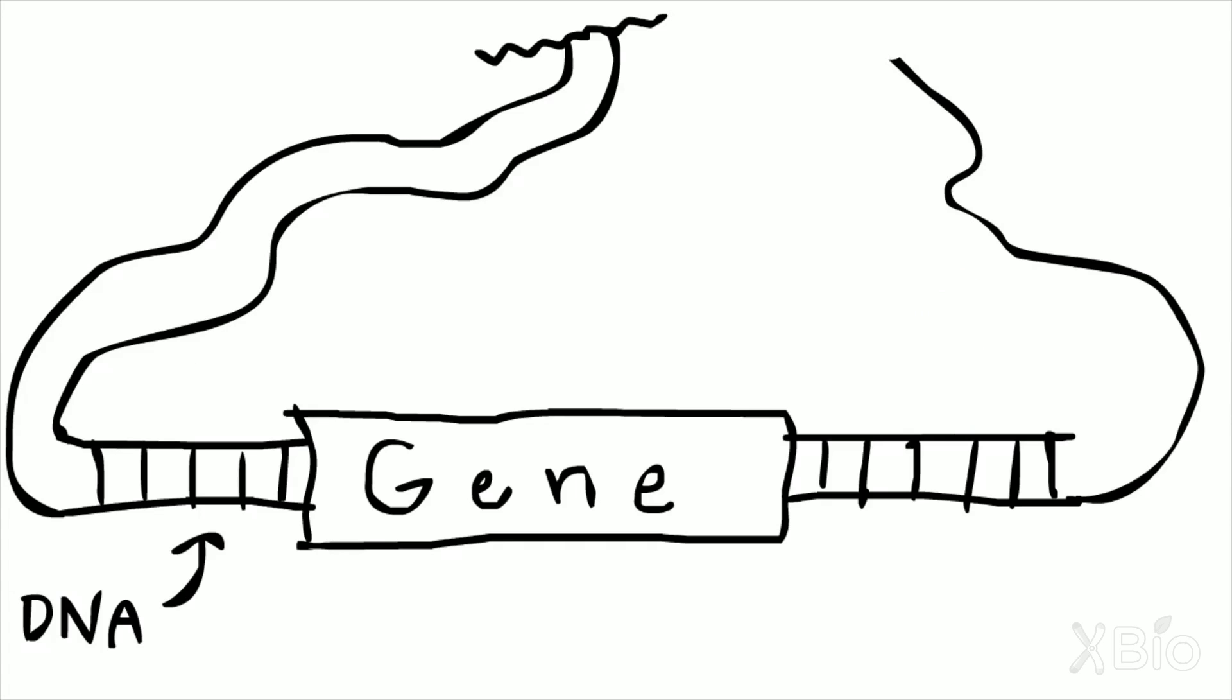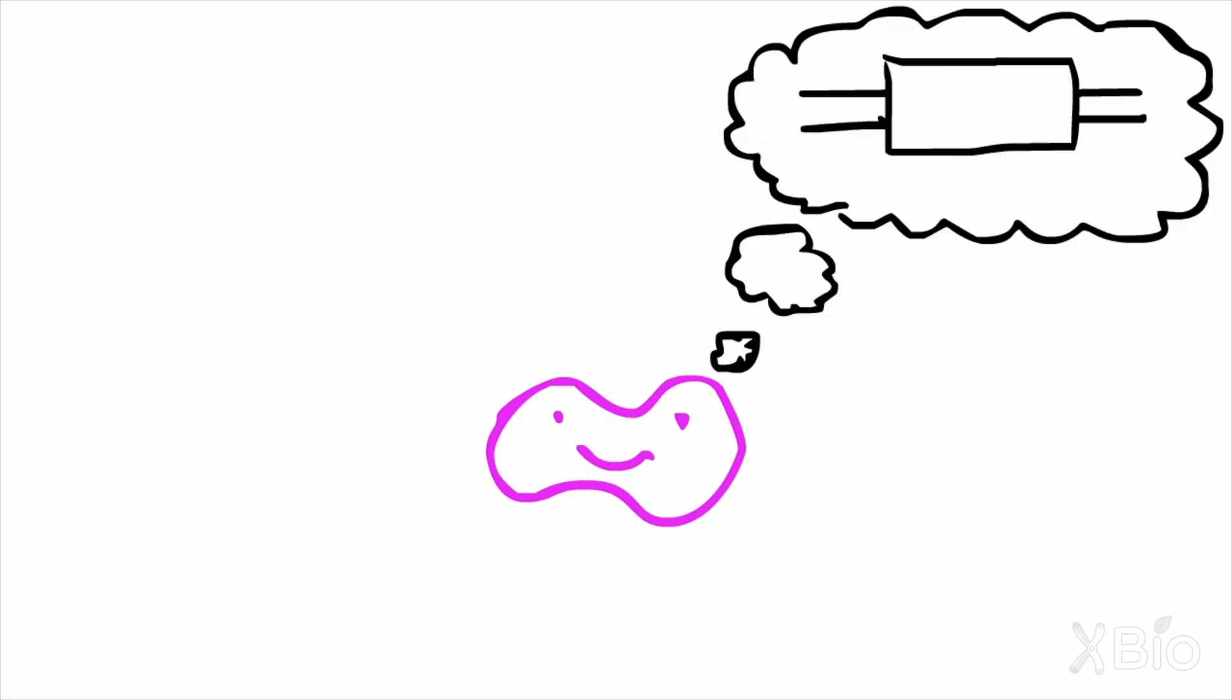However, the human genome is 3.2 billion base pairs long and only a small percentage of it contains genes. So how does RNA polymerase know where to transcribe?